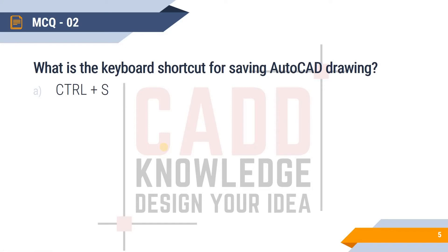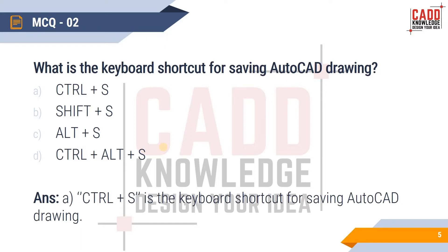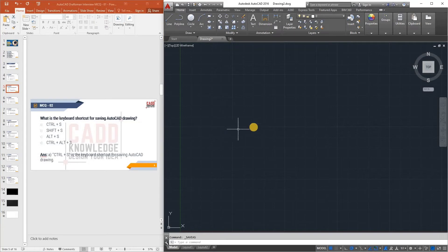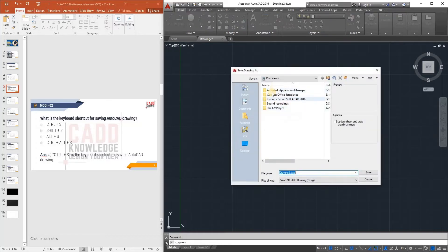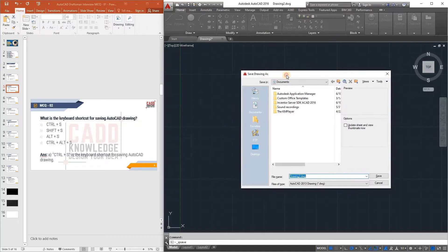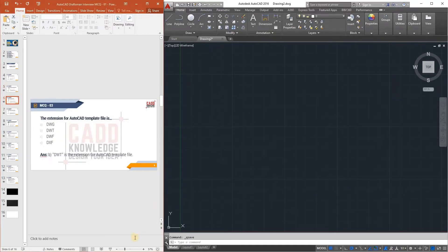The next MCQ: What is the keyboard shortcut for saving an AutoCAD drawing? Options are Ctrl+S, Shift+S, Alt+S, and Ctrl+Alt+S. The answer is Ctrl+S. If you press Ctrl and S on the keyboard, the Save Drawing window will appear, confirming Ctrl+S is correct.